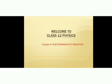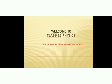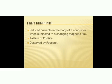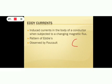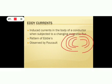As discussed in our introductory video, let's talk about eddy currents. Eddy currents are not like ordinary induced currents. Instead of a coil, if we place a conductor in a changing magnetic field, or if the conductor is moving in an external magnetic field, some circulating currents are set up. These circulating currents are known as eddy currents — they are the induced currents in the body of a conductor when subjected to a changing magnetic flux. These currents form patterns called eddies, which look like ripples in water.